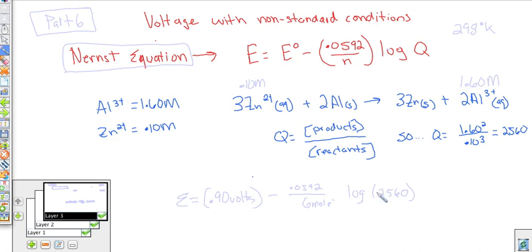So pretty simple. We're just going to go ahead and we could divide the 0.059 by six and multiply it times the log of 2560. And from all that, we'll get 0.034. And this part of the Nernst equation gives you voltage, actually.